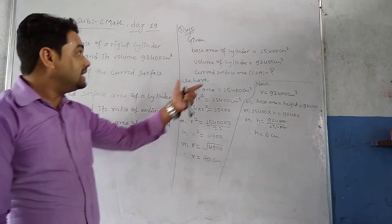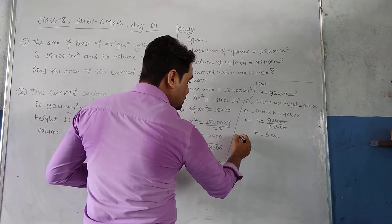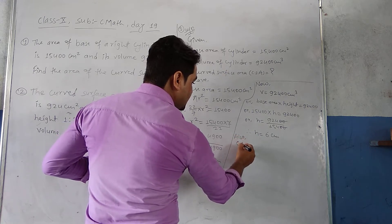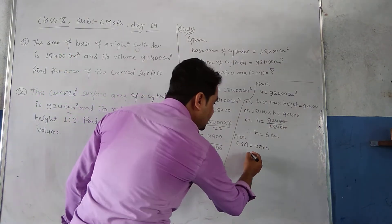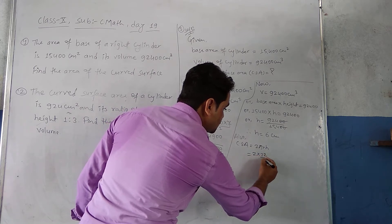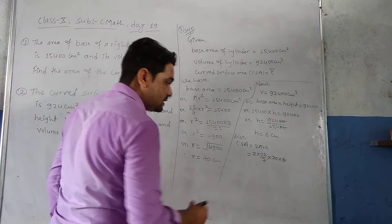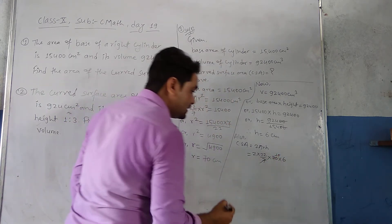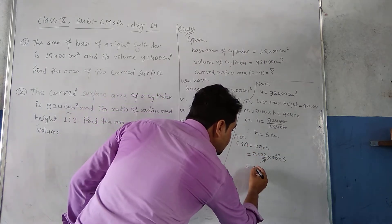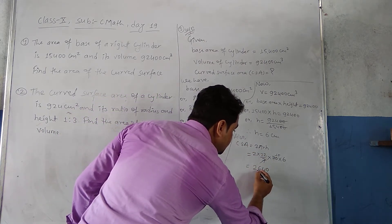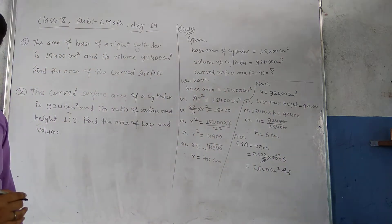Now we are going to find the CSA. The formula is CSA = 2πrh. Substituting: 2 × 22/7 × 70 × 6. The 7 cancels with 70 giving 10, so we calculate 2 × 22 × 10 × 6 = 2640. The CSA = 2640 cm².